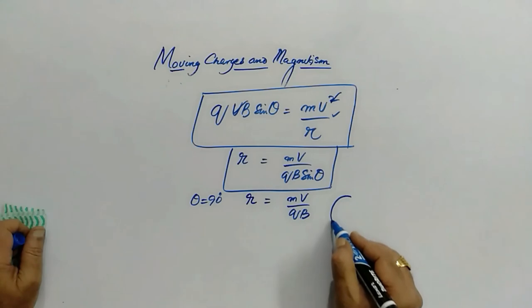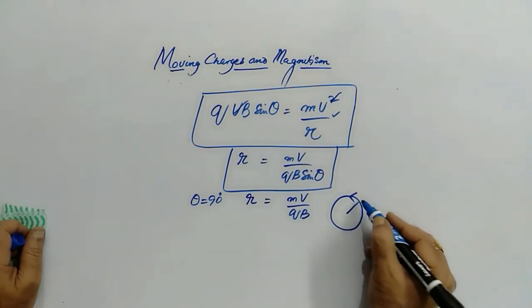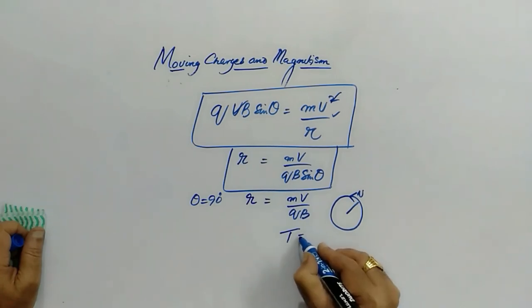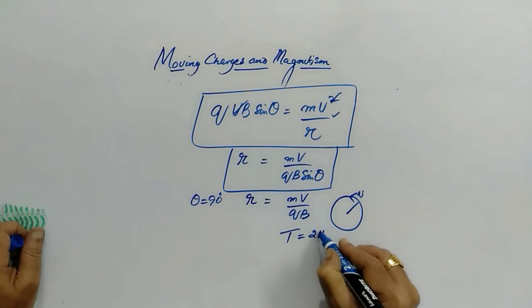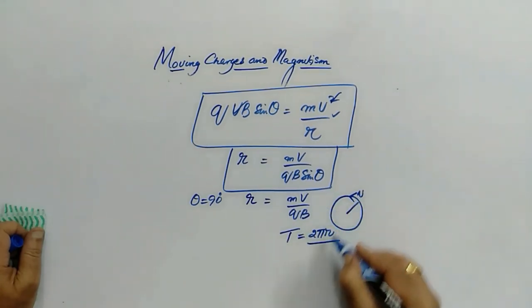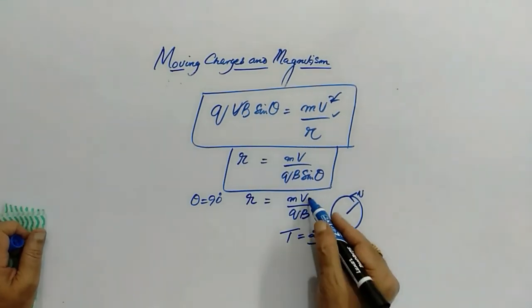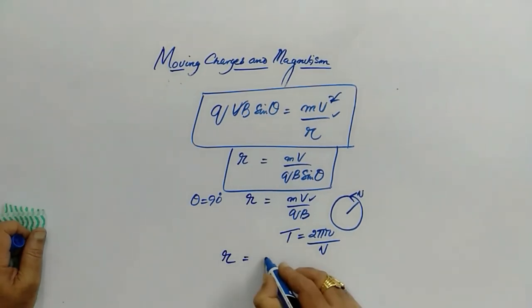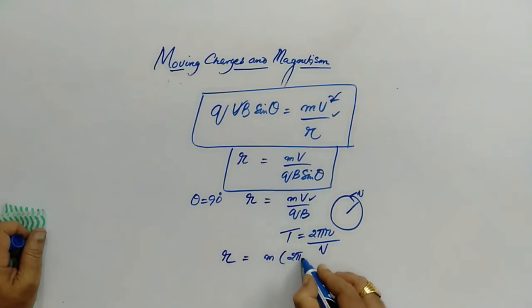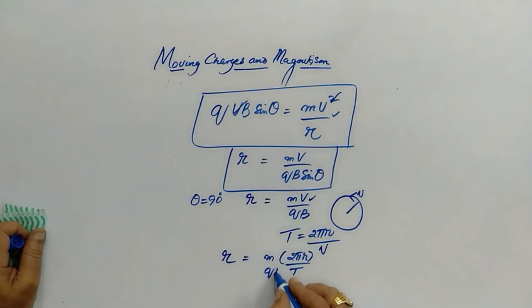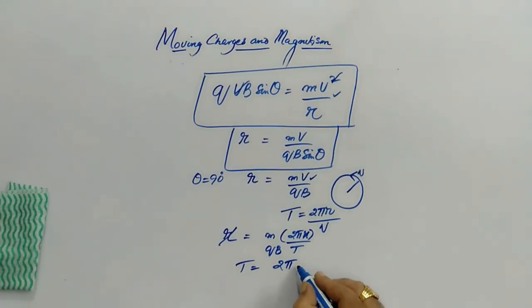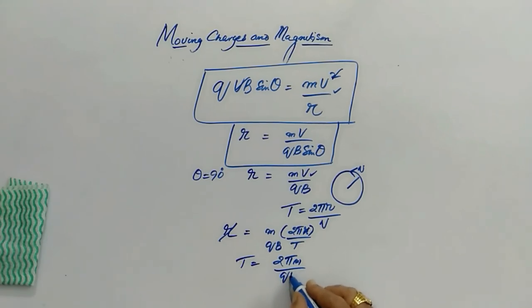If the object moves in a circular path with uniform speed, the time period T to cover one full circle is given by the total distance 2πr divided by speed v. Substituting v = 2πr/T into r = mv/qB and cancelling r from both sides gives T = 2πm / qB.